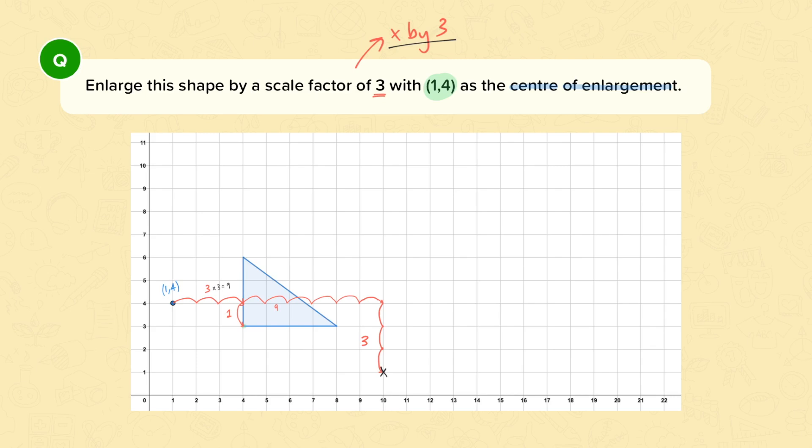Well now we've got this vertex, we can now draw the rest of the shape by inspection. Usually this side is 4 long. Well the scale factor is 3, so the new shape, that side needs to be 12 long, which will take me to here. This part of the triangle is 3 high, so my triangle needs to be 9 high, which will take me to here. Well now we have this bit drawn, I can simply add in the diagonal by joining up the two vertices.